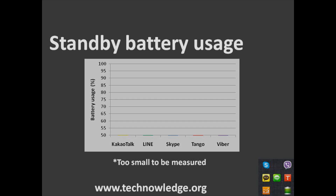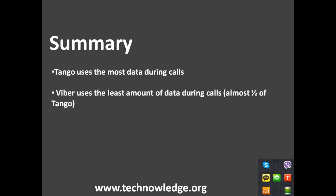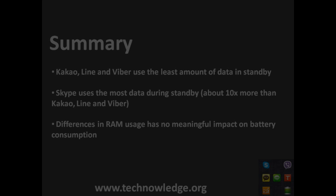Just in summary: Tango uses the most data during calls and Viber uses the least — almost half of what Tango uses. KakaoTalk, Line, and Viber use the least amount of data in standby mode, while Skype uses the most — about ten times more than KakaoTalk, Line, and Viber. The differences in RAM usage have no meaningful impact on battery consumption, so that's not really a consideration.